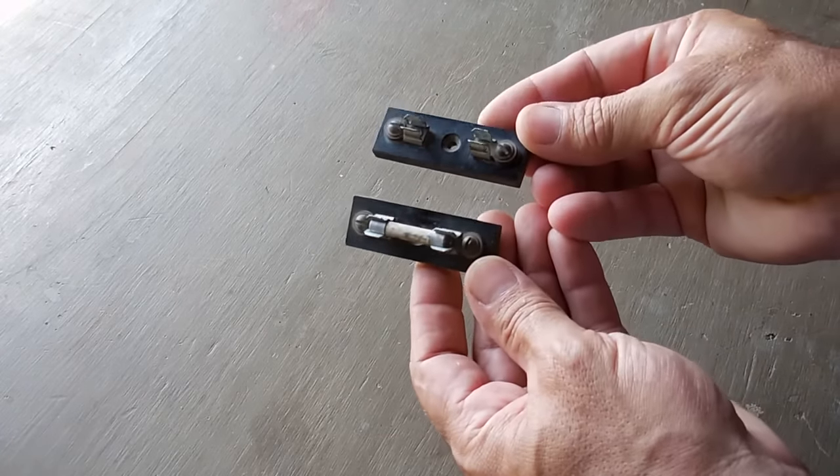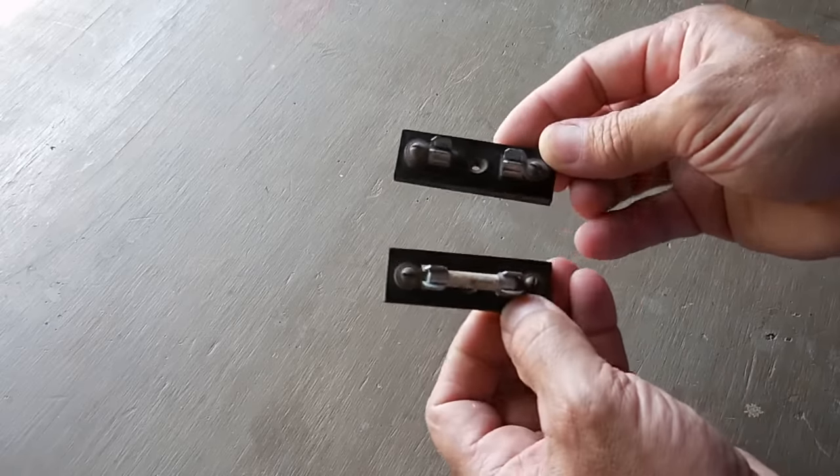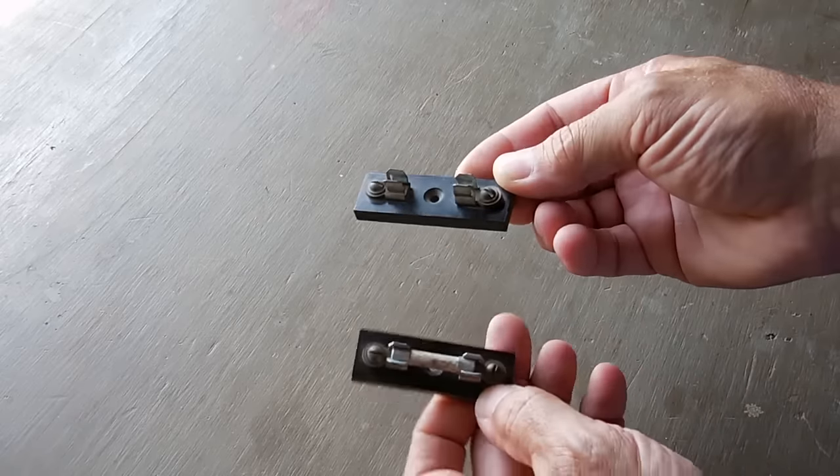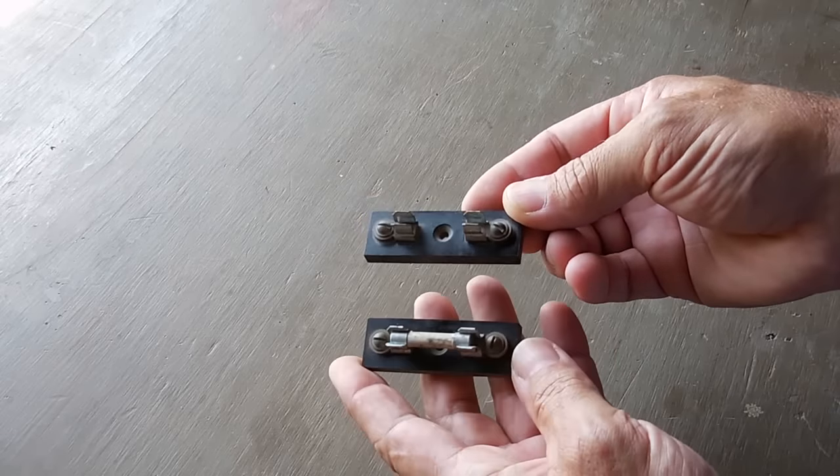Also came across two of these Bakelite fuse holders. This is really good quality. One screw in the middle. Put your fuse and you have your brass screws. You can put your blade or ring connectors on and you are good to go.